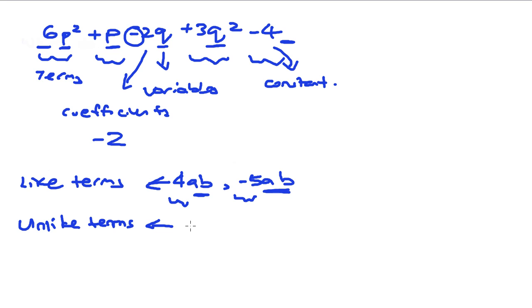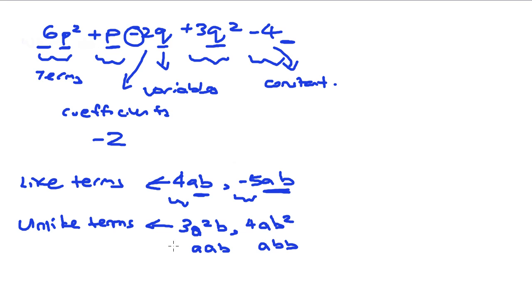So what is an example of unlike terms? For example, 3a²b and 4ab² — even though the variables are the same, meaning there's an a and a b, you can see that there's a square of a in one and a square of b in the other. So these are unlike terms, because 3a²b equals a times a times b, and 4ab² is a times b times b, which is different.